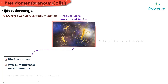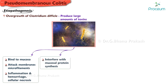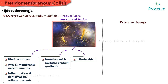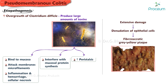These toxins bind to the mucosa, attack membranes and microfilaments of mucosal cells, producing damage by causing inflammation, hemorrhage, and cellular necrosis. They also interfere with mucosal protein synthesis and increase peristalsis. As a result of such extensive damage, there is denudation of epithelial cells and a fibronecrotic gray-yellow plaque is formed.